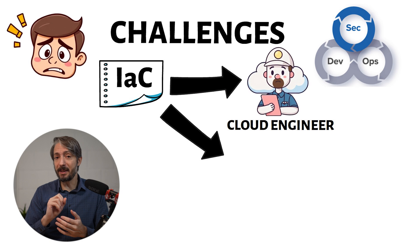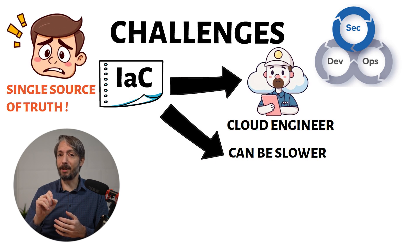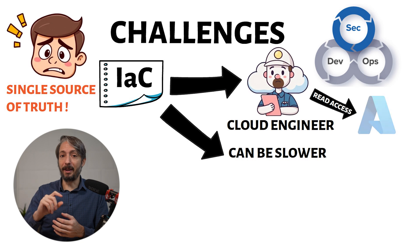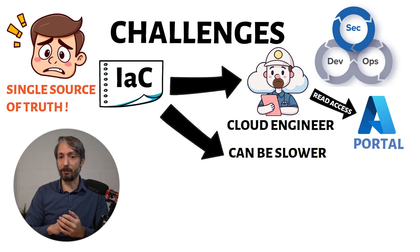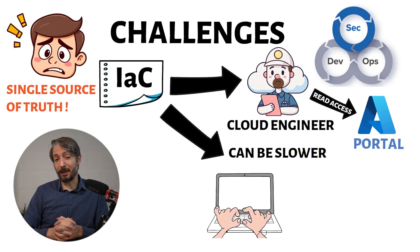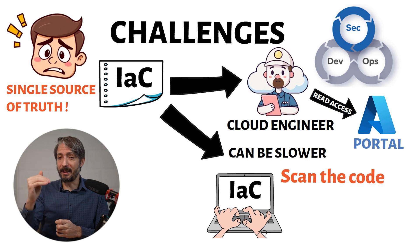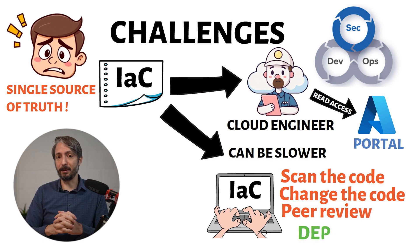Secondly, in some instances it can actually be slower. The idea is that the code is the single source of truth. Administrators only have read access to the Azure portal, so changes must go through the code and pipeline, which uses a service principal to access the environment. If you're trying to resolve a quick issue, where in the portal you'd just click one option and save, with Infrastructure as Code you need to find the issue in the code, change the setting, have it peer reviewed, and only then deploy.